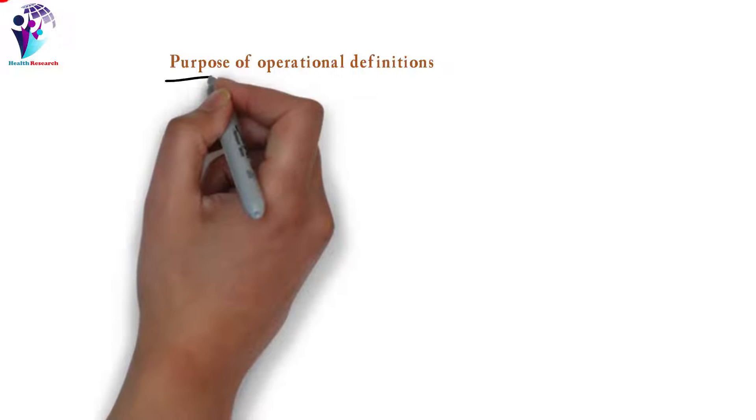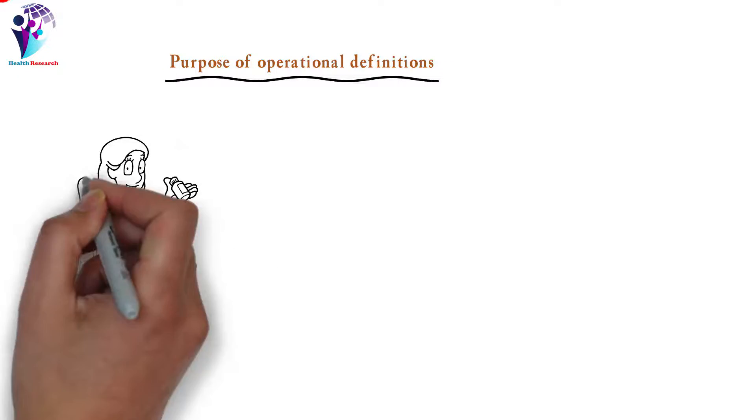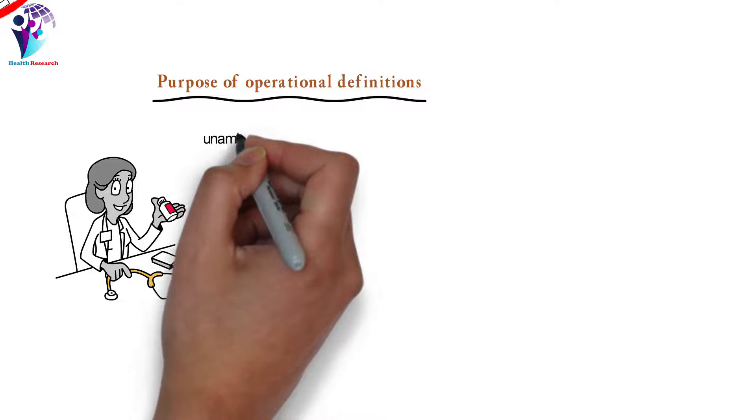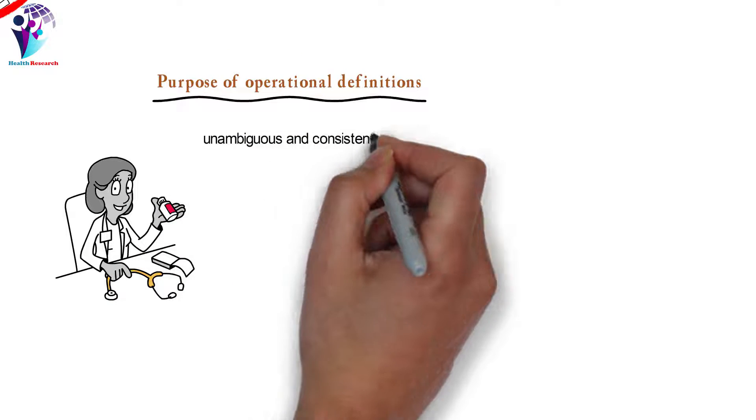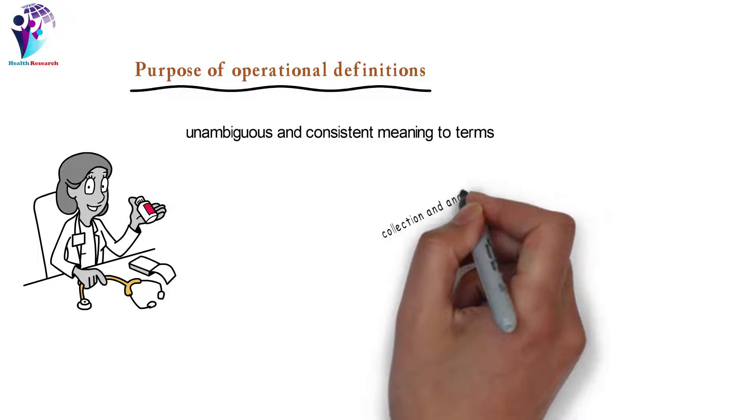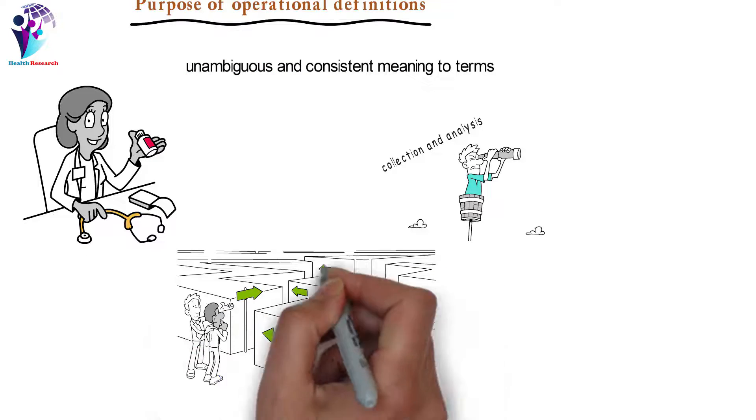An operational definition serves four purposes. It establishes the rules and procedures the researcher uses to measure the variable. It provides unambiguous and consistent meaning to terms or variables that can be interpreted differently. It makes the collection of data and analysis more focused and efficient. It guides what type of data and information we are looking for.